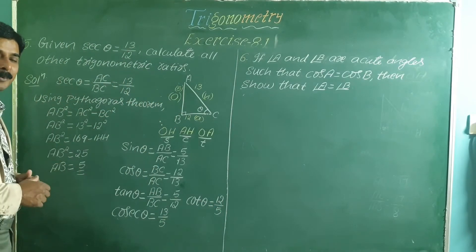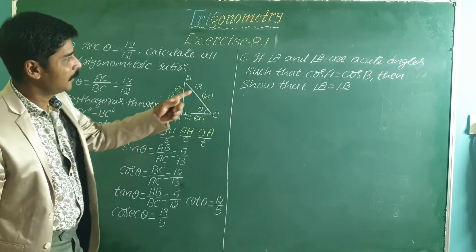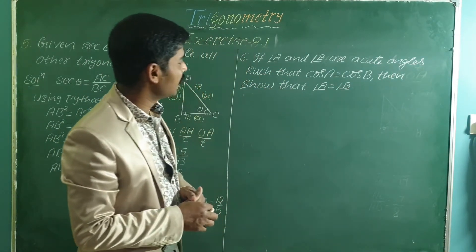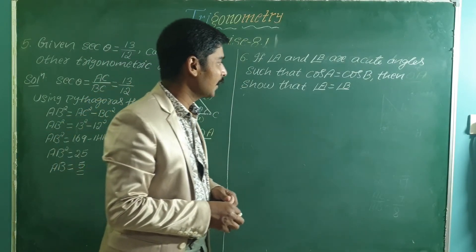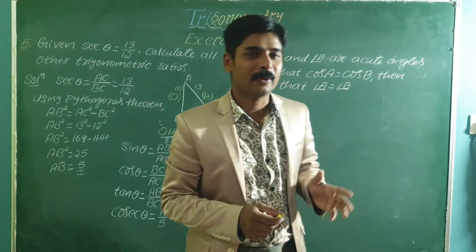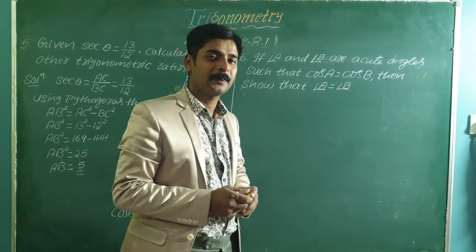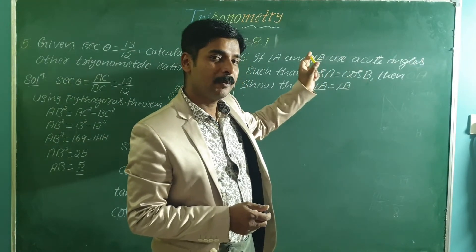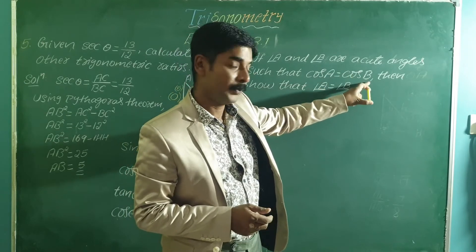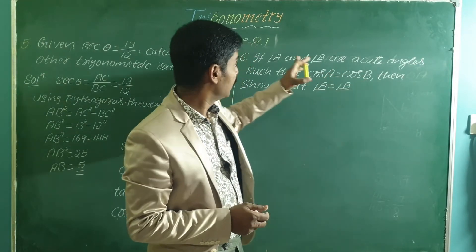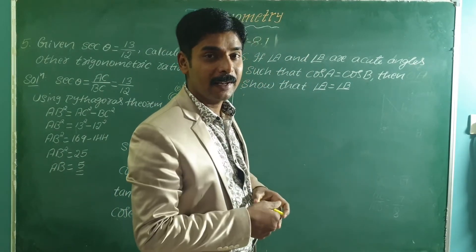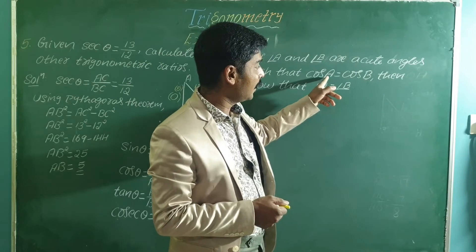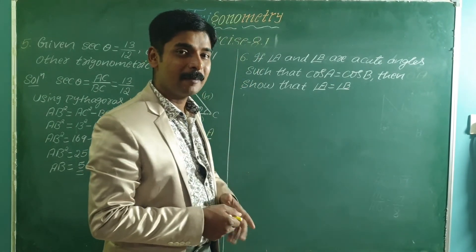Sixth problem: if angle A and angle B are acute angles such that cos A equals cos B, then show that angle A equals angle B. Here, angle A and angle B are the acute angles of the same right-angle triangle. So we take one right-angle triangle ABC where both angle A and angle B are acute.